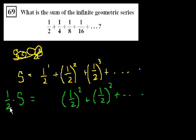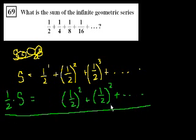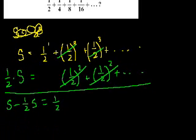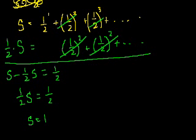If I subtracted this from that, what do I get? So I get S - (1/2)S, is equal to this minus this. Well, if I'm subtracting the green stuff from the yellow stuff, this is going to cancel out with that, that's going to cancel out with that, and all I'm going to be left with is this first thing right here. That's the trick. S - (1/2)S, that's just (1/2)S. (1/2)S is equal to 1/2. Divide both sides by 1/2, or multiply both sides by 2, and you get S is equal to 1.